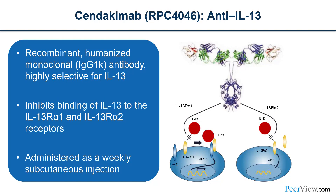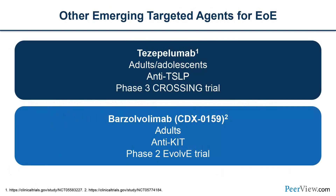There are other biologics being examined for treatment of EOE, such as cendakimab, an anti-IL-13 agent — a recombinant humanized monoclonal IgG1 kappa antibody highly selective for IL-13 that inhibits the binding of IL-13 to IL-13 receptor alpha-1 and IL-13 receptor alpha-2, administered as a weekly subcutaneous injection. Other emerging targeted agents include tezepelumab, an anti-TSLP agent examined in adults and adolescents, and benralizumab, an anti-KET agent examined in adults in a Phase 2 trial called the EVOLVE trial.